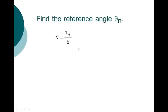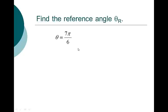How about 7 pi over 6? Well, 7 pi over 6 minus pi is 7 pi over 6 minus 6 pi over 6, which is pi over 6. So the reference angle for 7 pi over 6 is pi over 6. If I know the sine, cosine, and tangent of pi over 6, then I know the sine, cosine, and tangent of 7 pi over 6.